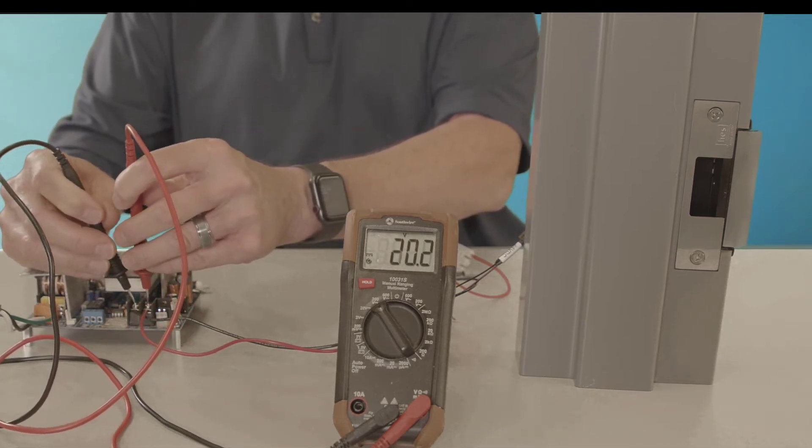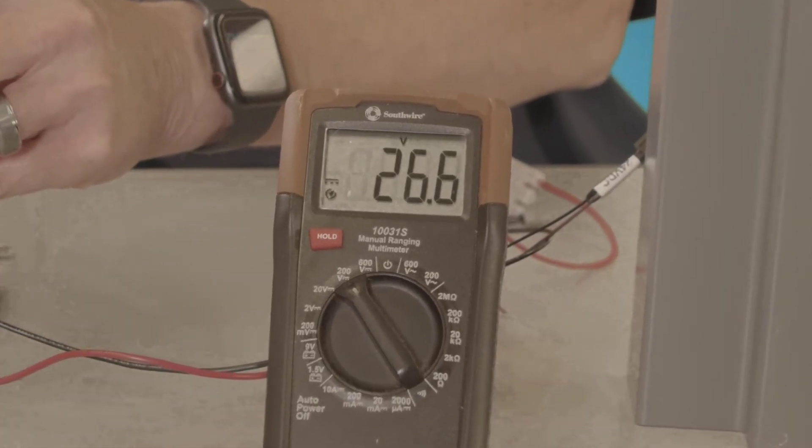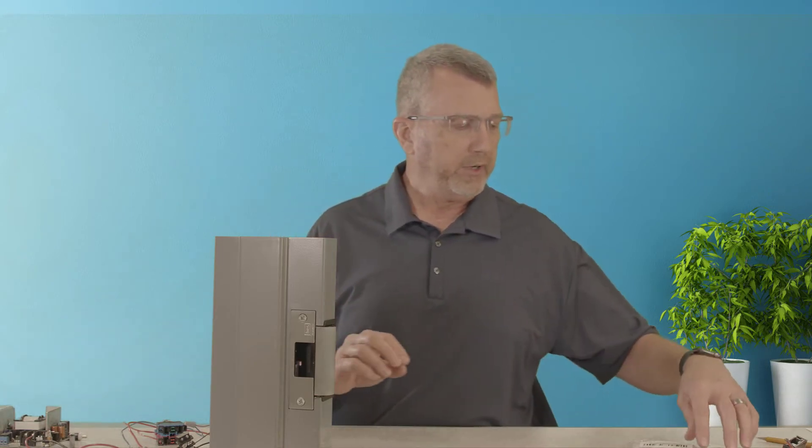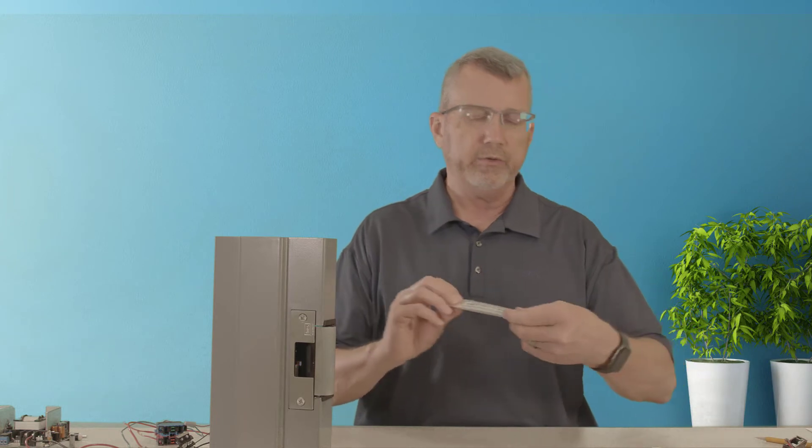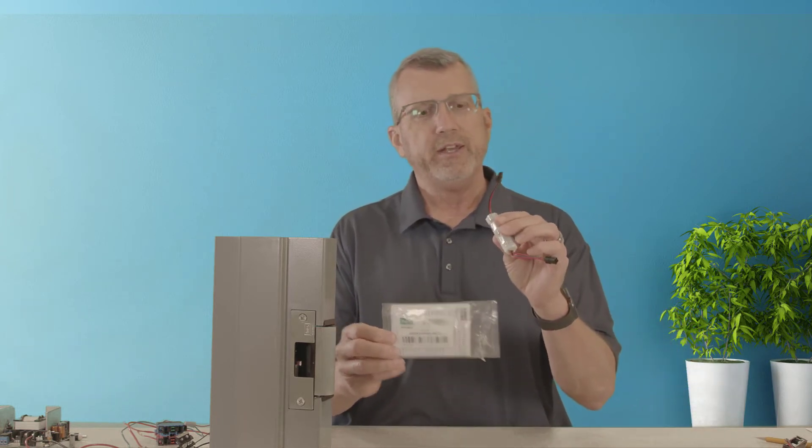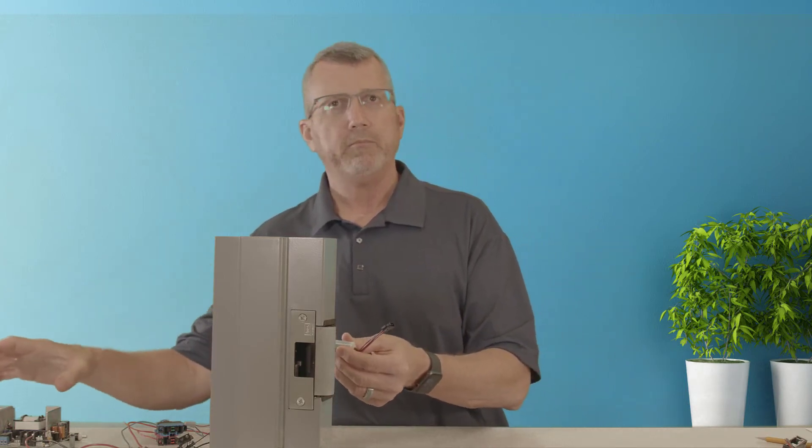We know from testing with our multimeter that is caused by excessive voltage from our access control system. So what I'm going to do is I'm going to use the HES Smart Pack 3 and put this in circuit to be able to reduce the voltage from my power supply through my circuit into my electric strike.